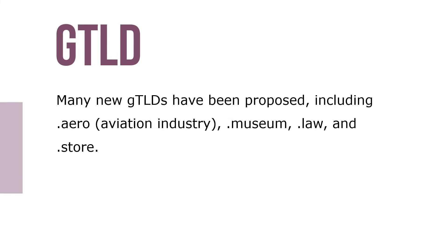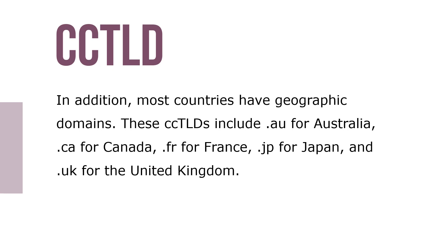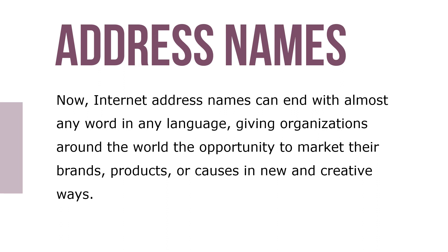In addition, most countries have geographic domains. These ccTLDs include .au for Australia, .ca for Canada, .fr for France, .jp for Japan, and .uk for the United Kingdom. Now, Internet address names can end with almost any word in any language, giving organizations around the world the opportunity to market their brands, products, or causes in new and creative ways.